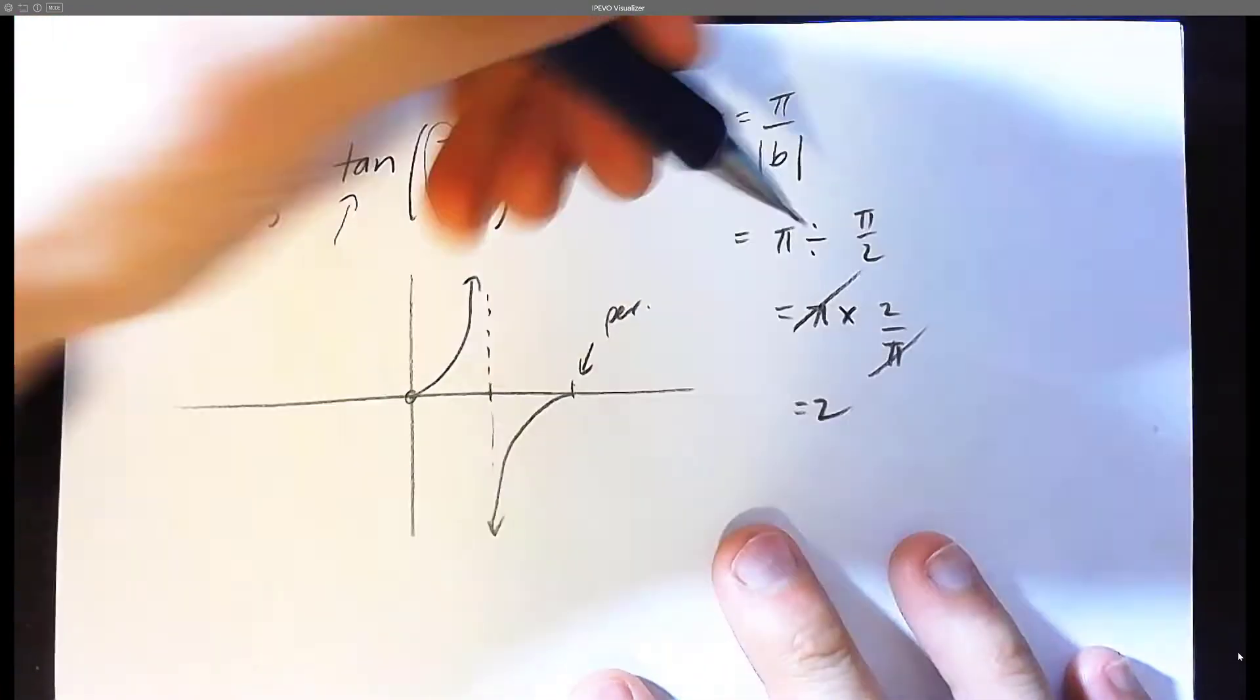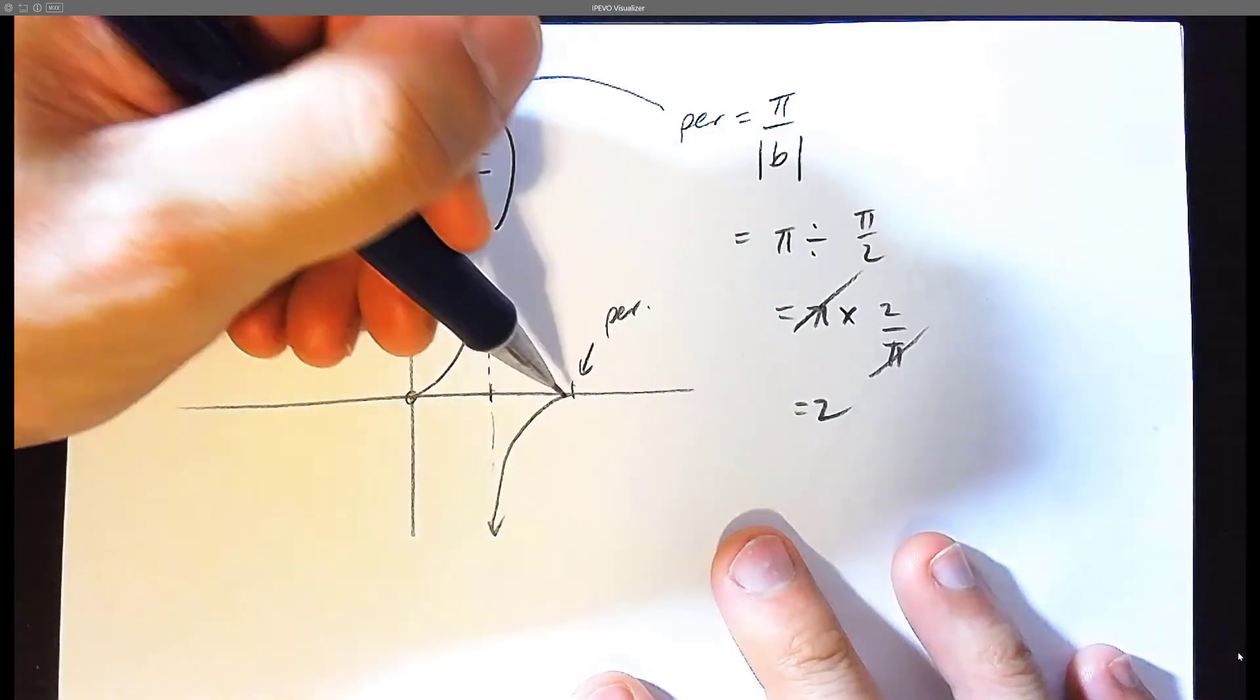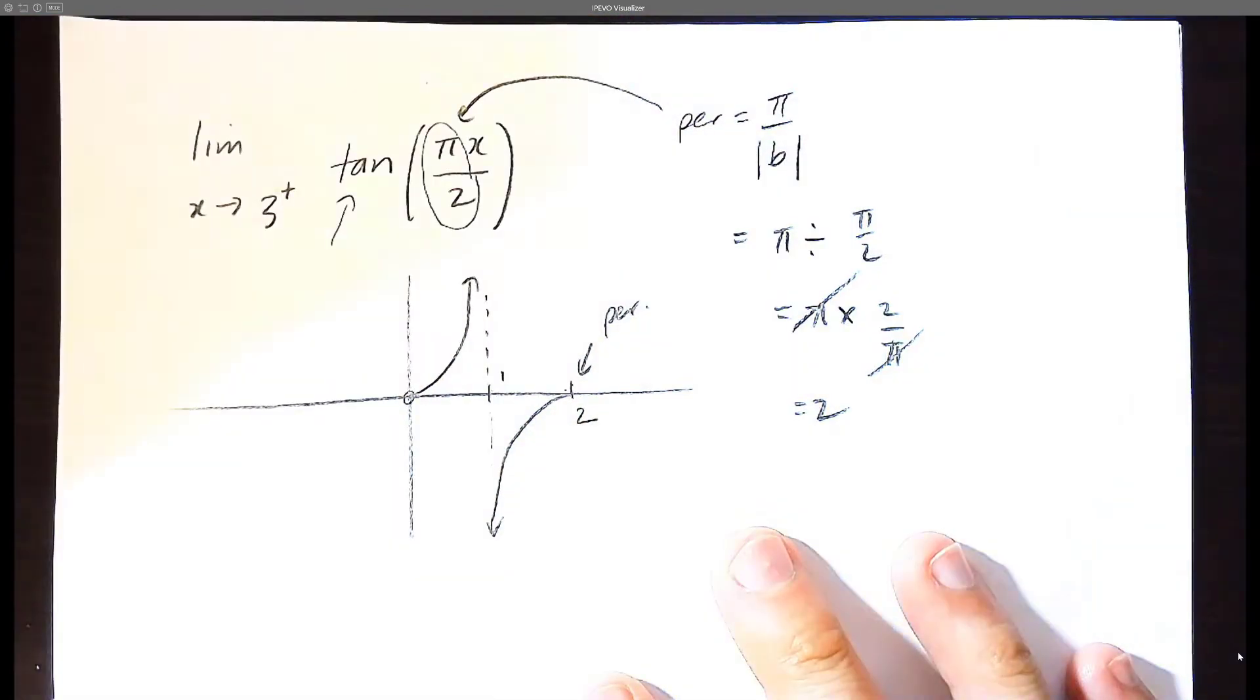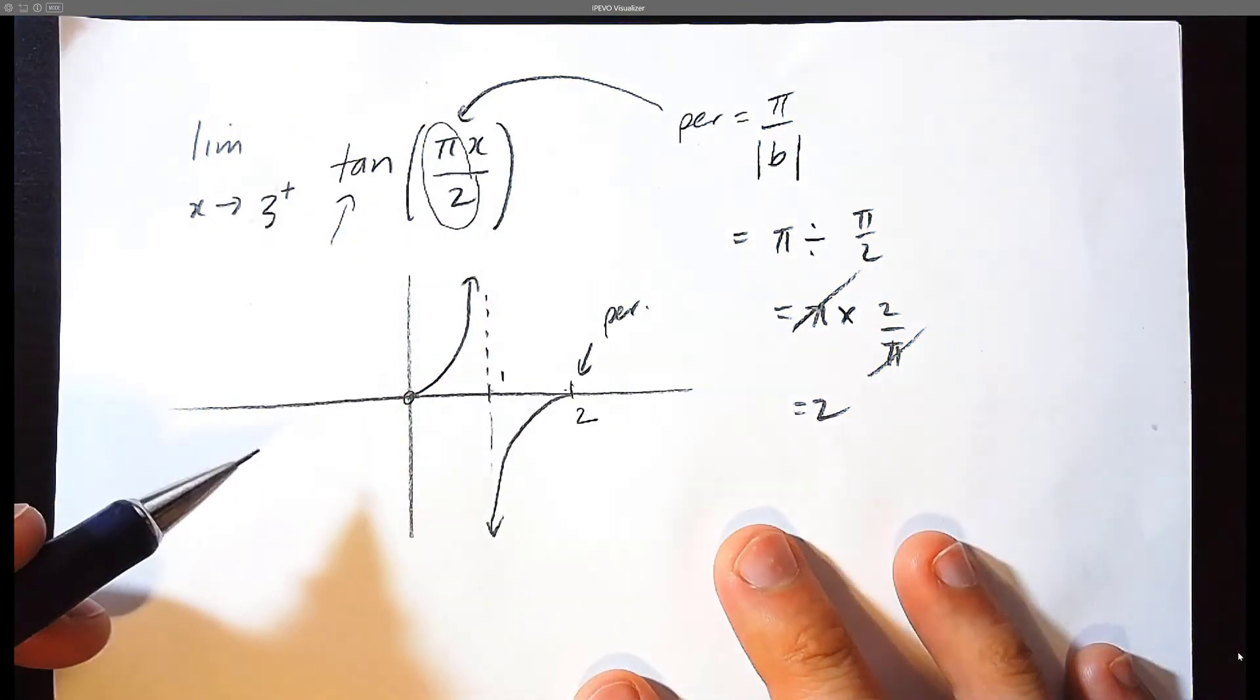Which means that every two ticks here, this is the period of 2, the vertical asymptote would be at 1. And now we've sketched this graph correctly.